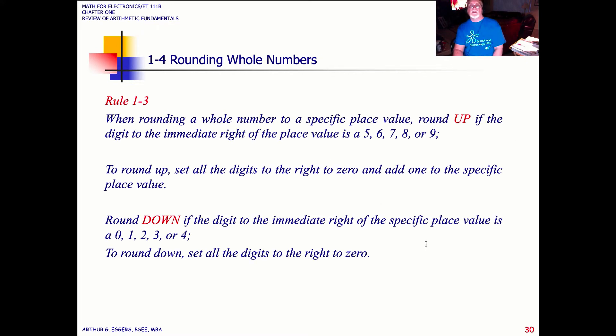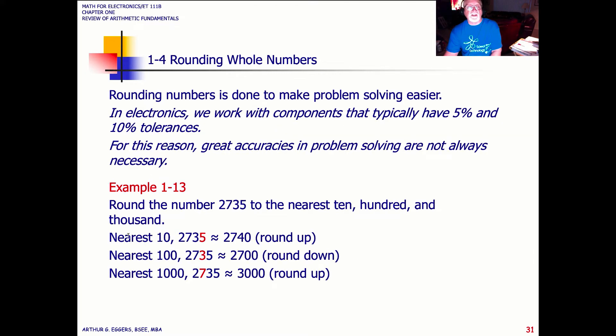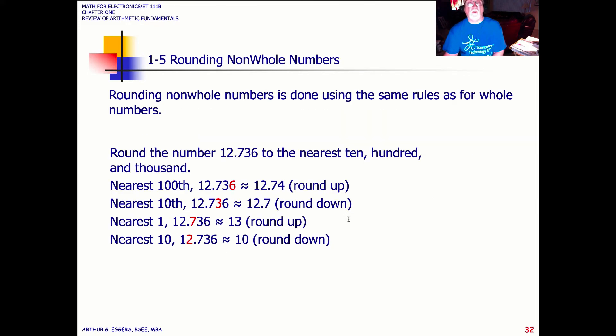In rounding, the rules are generally anything, a number greater than five, we round up. Anything less than four, four or less, we round down. So in these examples, if we want to round to the nearest tenth, we have a five, so that's telling us round up. The nearest hundredth, we have a three, that means round down. The nearest one thousandth, we have a seven, round up. These apply both for fractions and whole numbers.